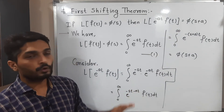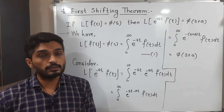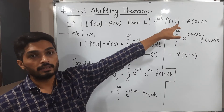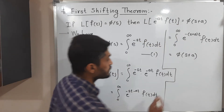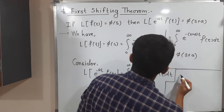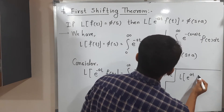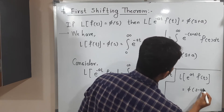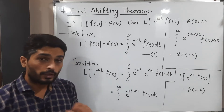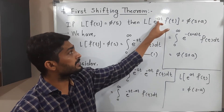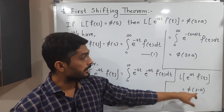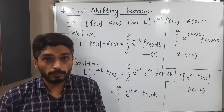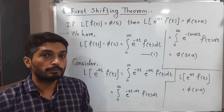The proof was quite easy, but the actual result is very important. When you have e raised to minus at times f(t), its Laplace will be φ(s + a). There is one corollary also: Laplace of e raised to at times f(t) is φ(s − a). So if there is minus a, you add a; and if there is plus a, you subtract a. Exactly the opposite thing we have to do.